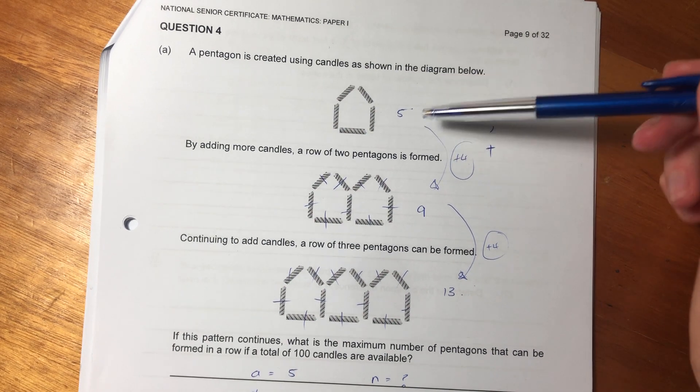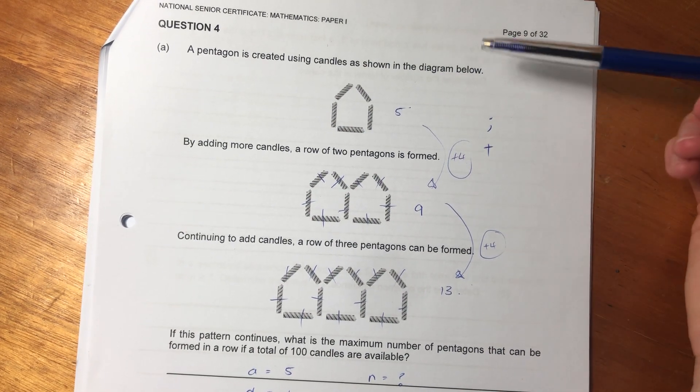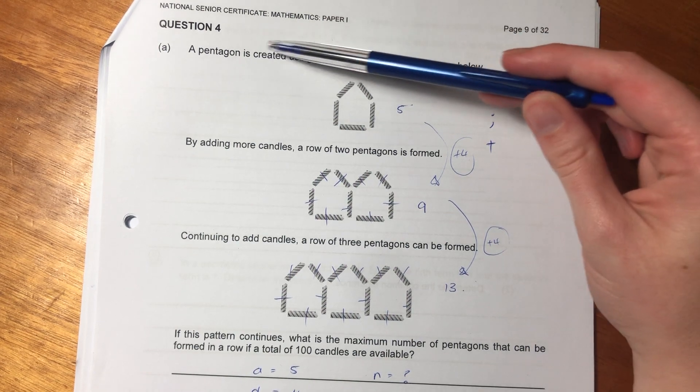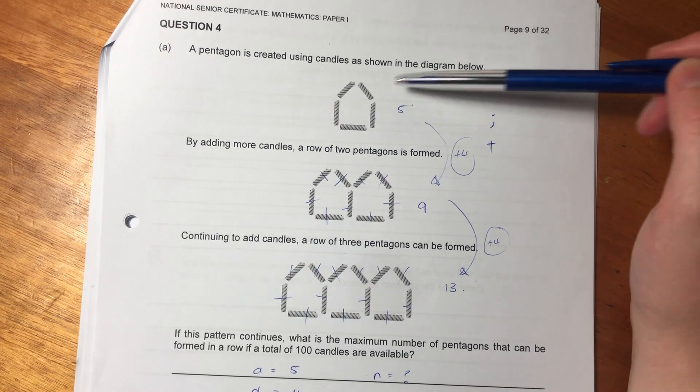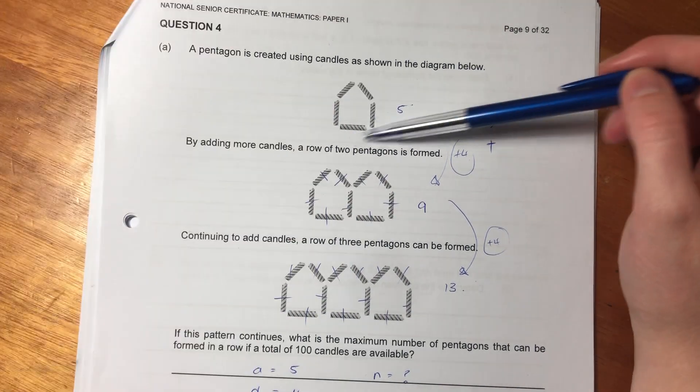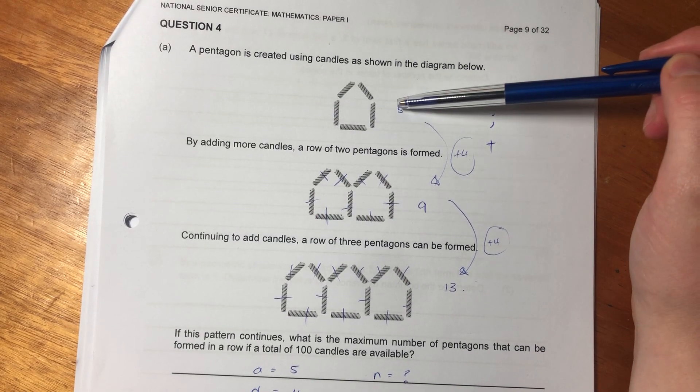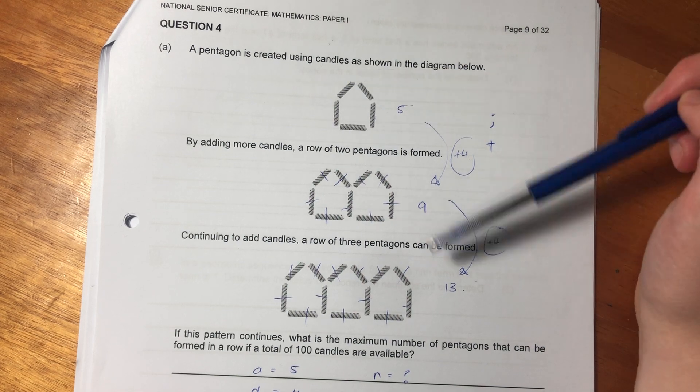So let's just quickly read the question. I made a couple of notes for us, so let's see what they're asking us. It says a pentagon is created using candles as shown in the diagram below. So we see here that this is one pentagon, pentagon means five sides, and there are five candles.